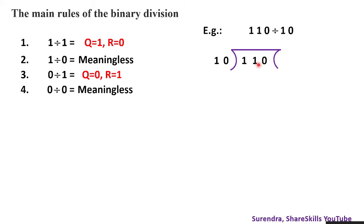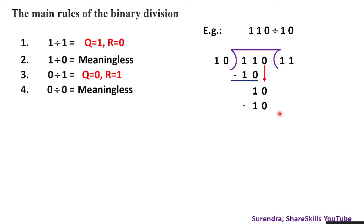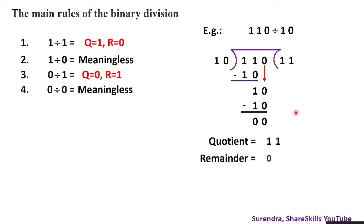Since the divisor has two digits, we take two digits at a time. We take 10 from the dividend — 10 ones are 10, so the partial quotient is 1. Subtracting: 1 minus 0 is 1, and we bring the zero down. Again we have 10, which gives quotient 1. So the final quotient is 11 and the remainder is 0.